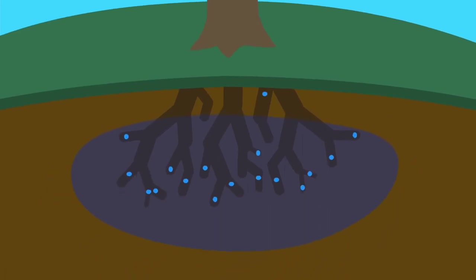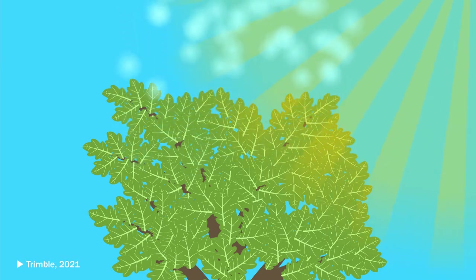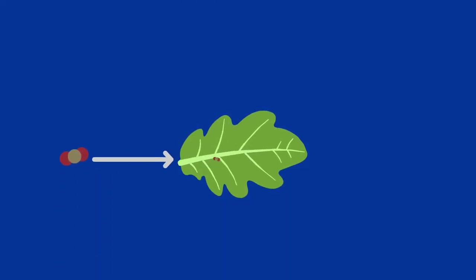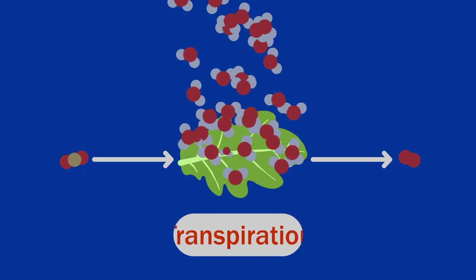We all know that plants drink water through their roots, but what happens to that water? Most of it comes out through the leaves as part of the process of photosynthesis. In fact, for each molecule of carbon dioxide fixed and each molecule of oxygen released, several hundred molecules of water are evaporated. This is what we call transpiration.